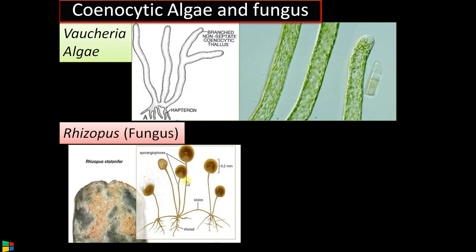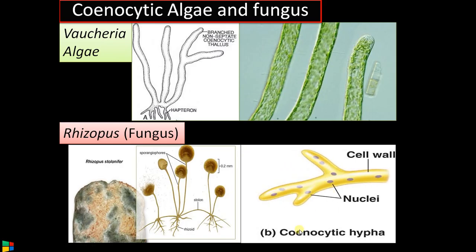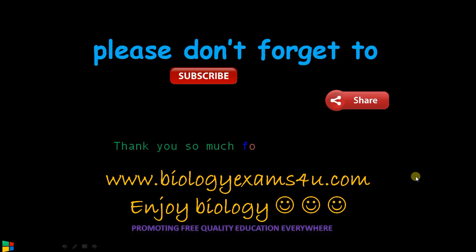Then there is fungus — the common bread mold. In that case also, there is a mass of hyphae that doesn't have a septum, and many nuclei are floating or streaming in a common protoplasm. These are the major notable exceptions to the classical cell theory. Thank you so much for your attention — you are with biologyexams4u.com.